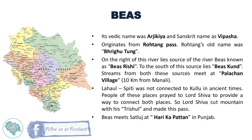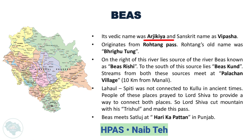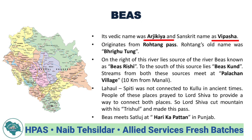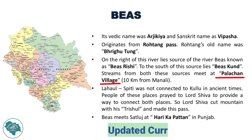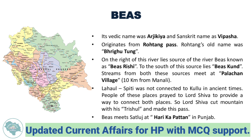Talking about Beas River — its Vedic name is Arijikya and Sanskrit name is Vipasha. It originates from Rohtang Pass, whose old name was Bhrigutung. On the right of the river lies the source known as Beas Rishi, and to the south lies Beas Kund. Streams from both sources meet at Palachan village, 10 km from Manali. It is believed that Lord Shiva cut the mountain with his trishul to make Rohtang Pass, connecting Lahul Spiti with Kullu. Beas meets Satlaj at Hari Kapatan in Punjab.